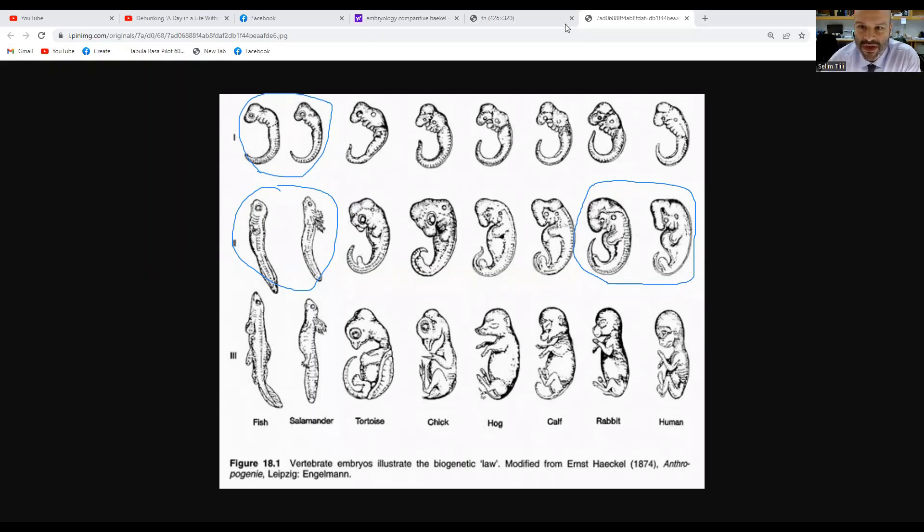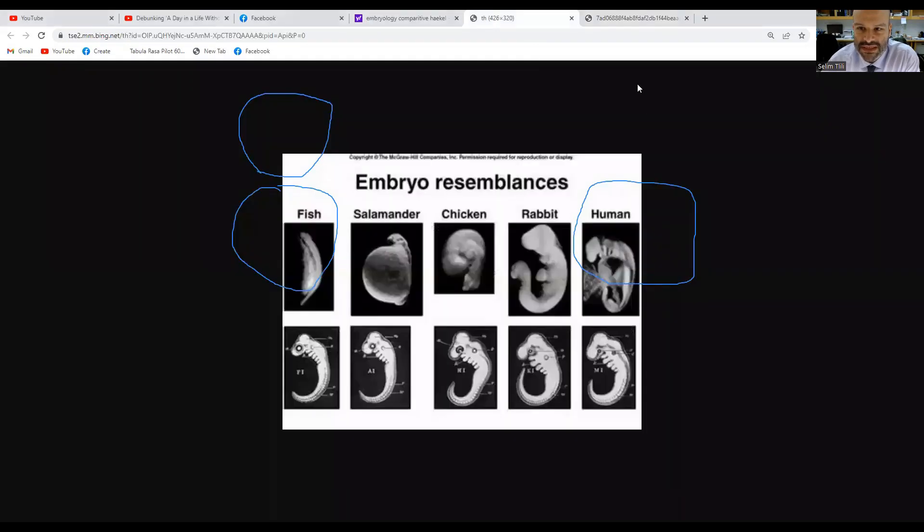If we look at more modern images, MRIs of organisms, you can see that they're not quite as similar as he drew. Haeckel drew these images suggesting they're really almost identical at that first stage. These MRIs suggest there's much more difference than he was letting on, but even in these images we can see that there is a shared ancestry. We can see the backbone here, we can see the tail.